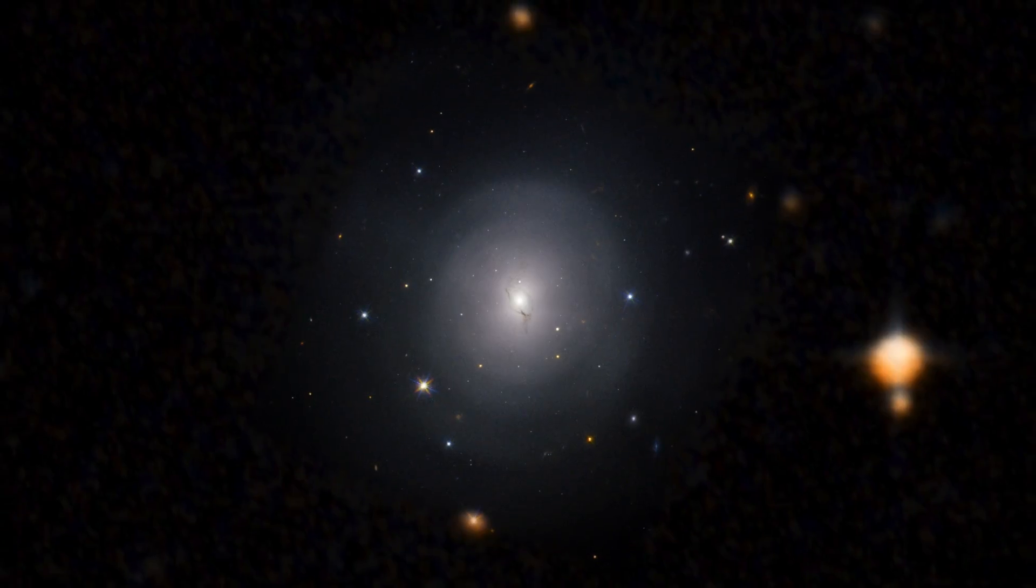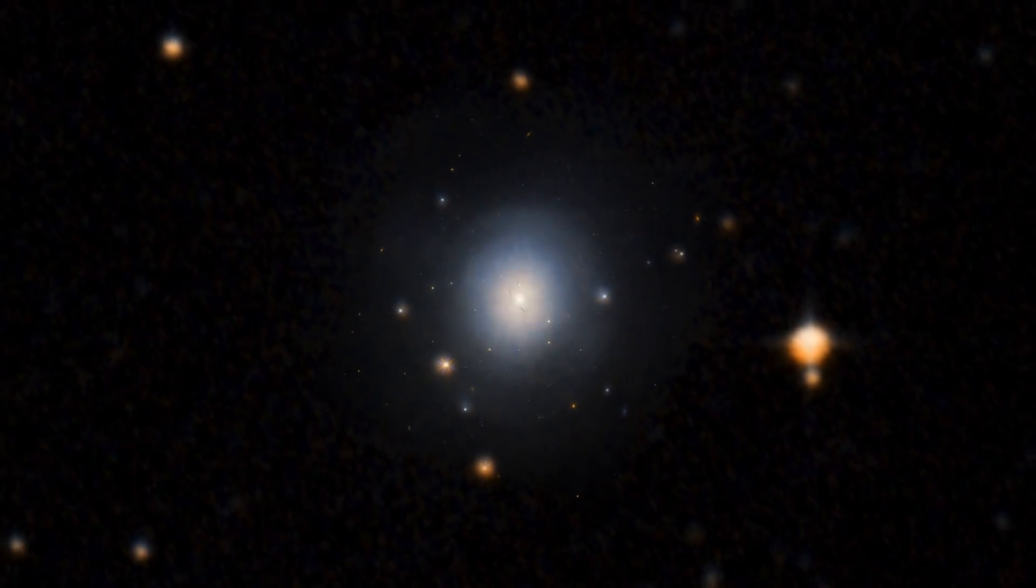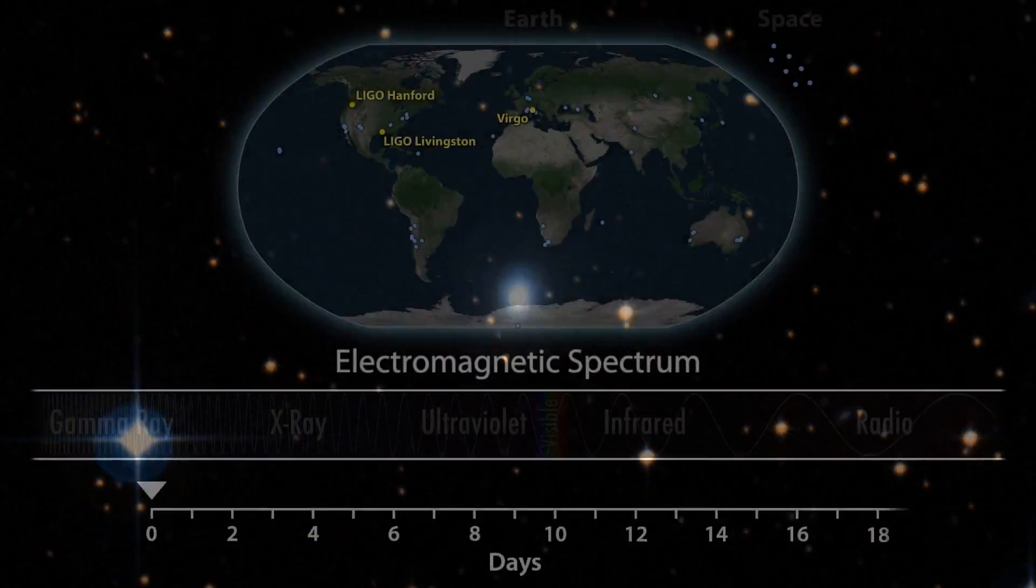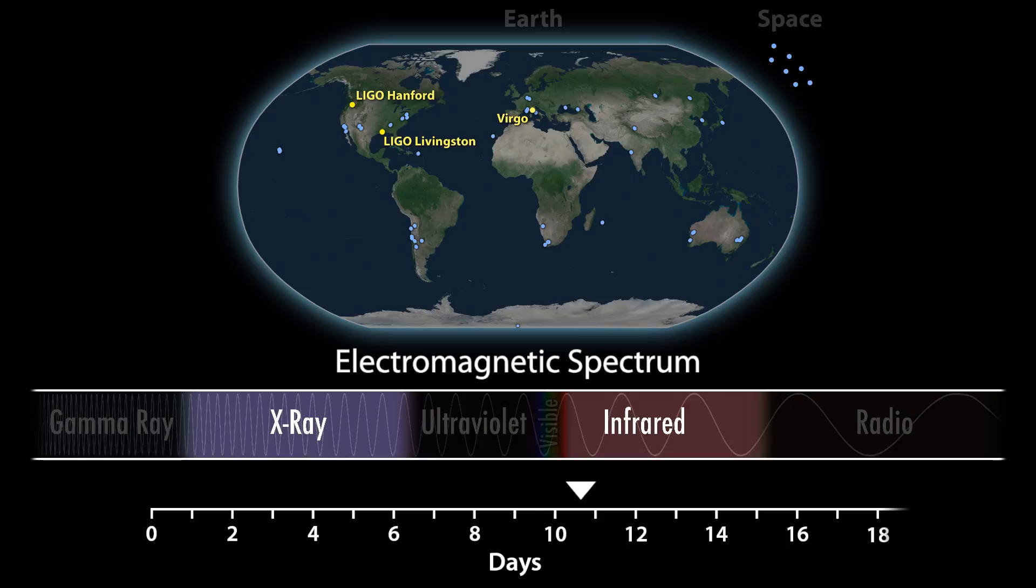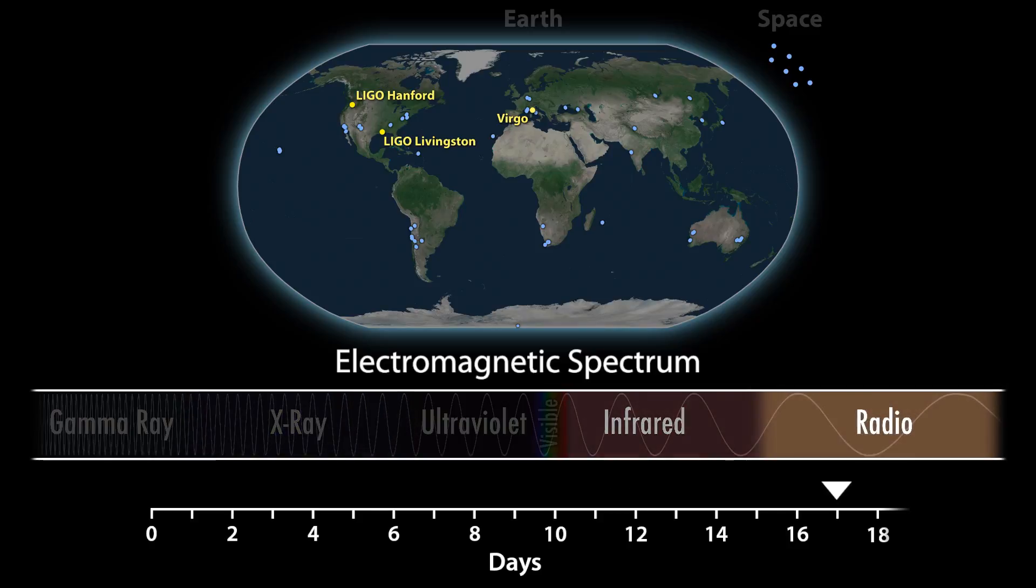Knowing exactly where to look, astronomers began an unprecedented campaign of follow-up observations using more than 70 telescopes around the world and in space. During the course of the next two weeks, the neutron star merger was detected across the entire electromagnetic spectrum.